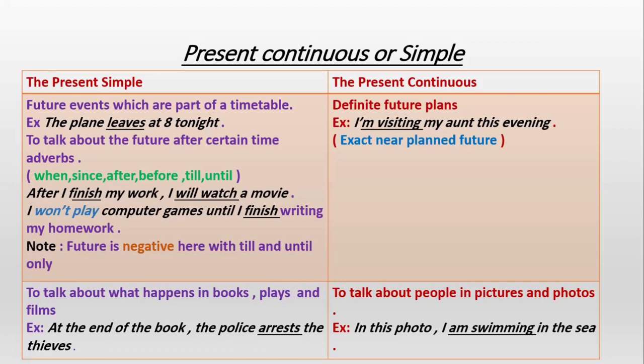Still on the difference between the present continuous and the present simple: both forms can be used to show the future, but there is a difference. The present simple, as it goes with permanent stable situations, is used to indicate scheduled future — timetable future — with actions that are permanent for a long time, like appointments with doctors, hospital schedules, timetables of schools, banks, trains, flights, ships. These are future actions but stable and scheduled for a long time.